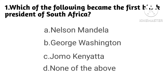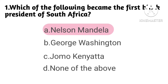Which of the following became the first black president of South Africa? Option A: Nelson Mandela. Option B: George Washington. Option C: Jomo Kenyatta. Option D: None of the above. Correct answer is Option A.